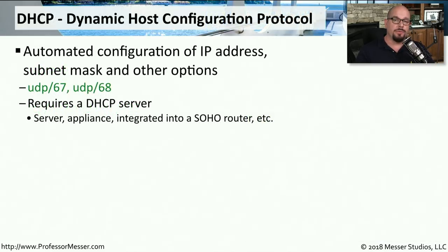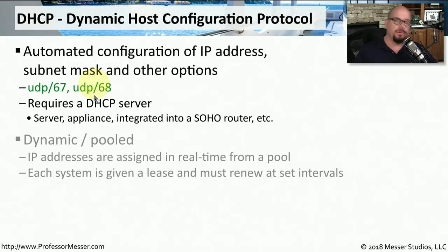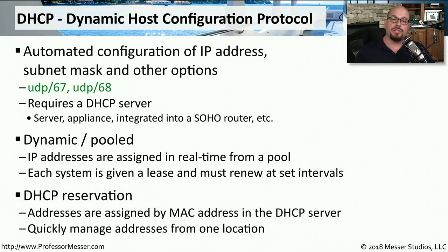When you turn on your computer for the first time, it automatically configures itself with an IP address. It's able to do this because it's using DHCP, the Dynamic Host Configuration Protocol. There is a DHCP server somewhere on your network, and your client communicates with that server using UDP port 67 and UDP port 68. Once your workstation receives this IP address, it's available for a particular lease time, and before that lease is up, it has to check back in with the DHCP server. DHCP servers can also be configured with DHCP reservations, where the server recognizes the MAC address of a device and provides the same IP address to that device every time.